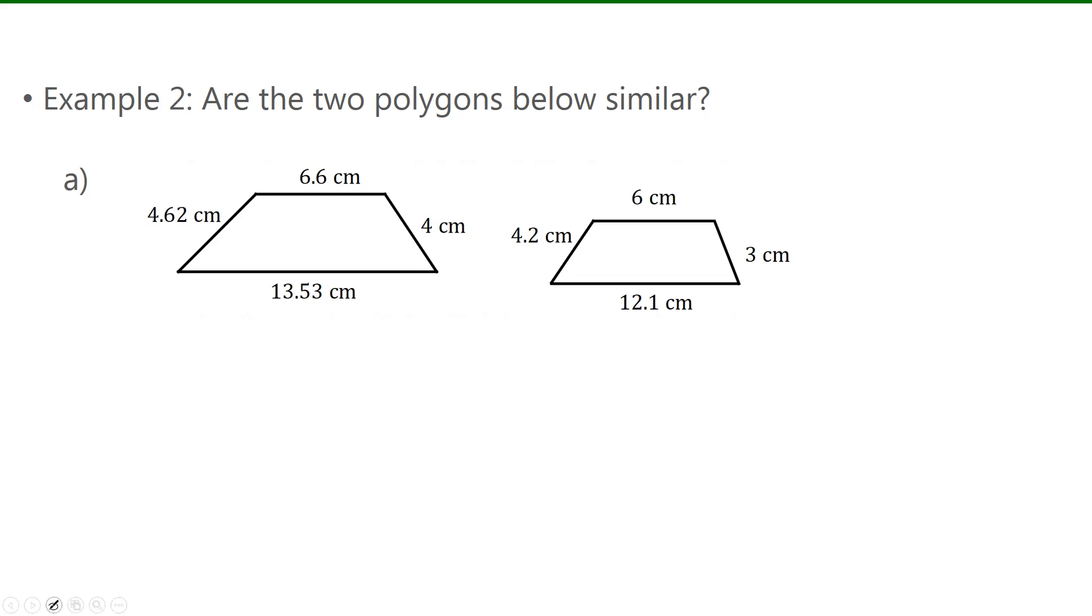Now in example 2, I have to determine if the two polygons are similar. Now we have to check two things. Number 1, if all the angle measurements, all the corresponding angle measurements are the same. And number 2, make sure all the corresponding side lengths are proportional. So I'm going to check to see if all the side lengths are proportional first.